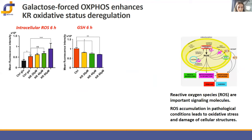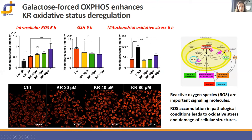We proved that kinetin riboside in galactose medium triggers cell death through apoptosis not only by disrupting cellular ATP generation but also by inducing oxidative stress. In response to kinetin riboside-induced energetic stress, intracellular ROS is formed with significant depletion of reduced glutathione in HepG2 cells. We also analyzed mitochondrial oxidative stress using flow cytometry and confocal microscopy with the MitoSOX red dye, which is selectively triggered in mitochondria in the presence of superoxide. Analysis revealed that 80 µM kinetin riboside induces superoxide production with an approximately 30% increase in fluorescence intensity.